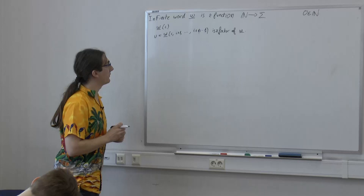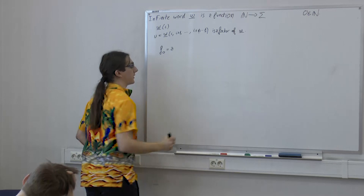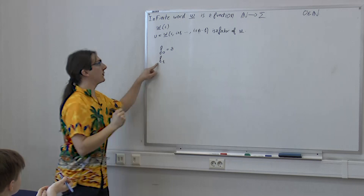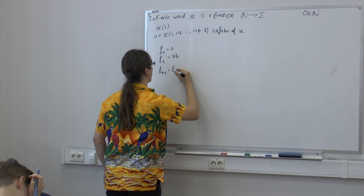For now I can give easier examples of infinite words. Of course there are periodic ones, but otherwise you can define them by recurrence. Something very common: I could define a sequence f, where f0 equals a, f1 is ab, and f_{n+2} is f_{n+1} concatenated with f_n.